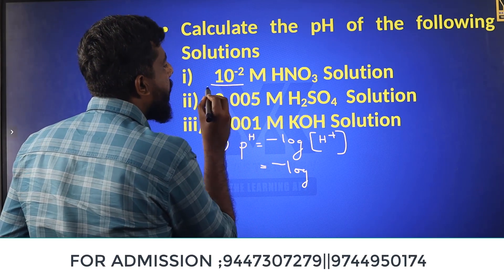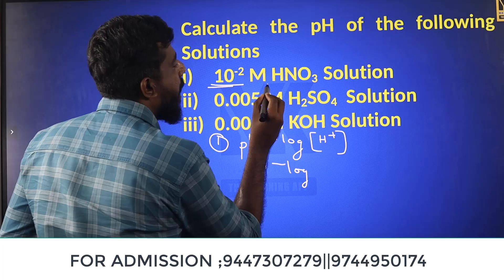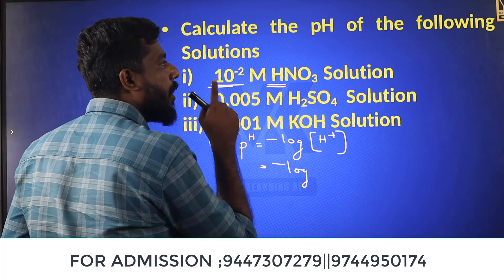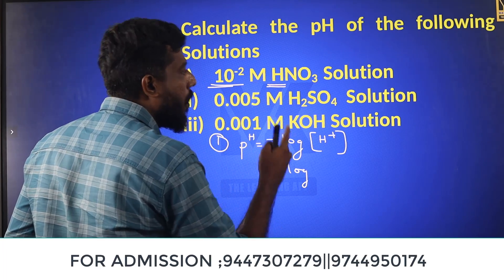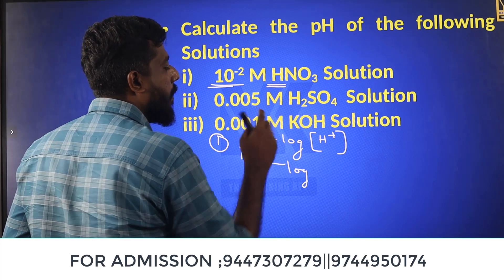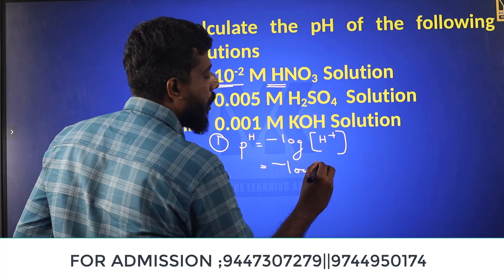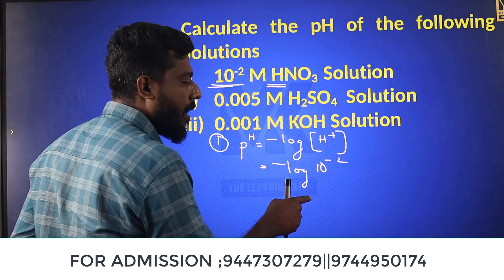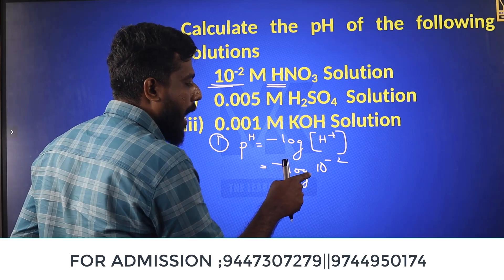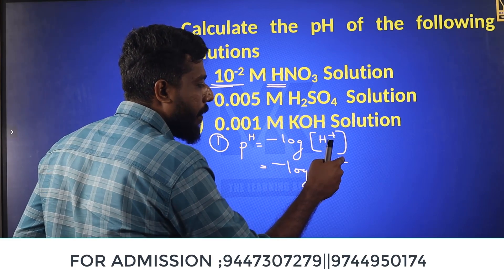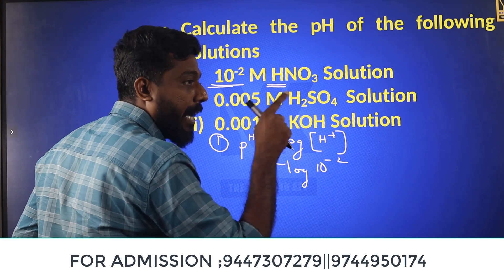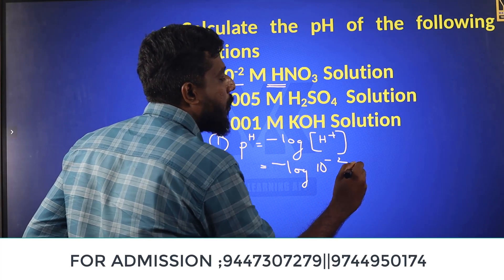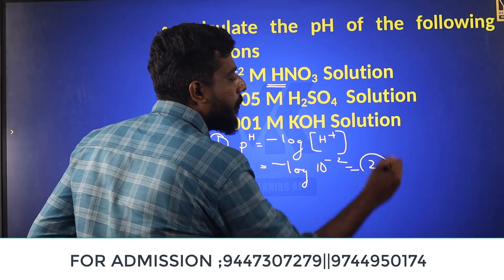Here is a question: What is the pH of a hydrochloric acid solution? The molarity is 10 raised to minus 2. HCl concentration is 10 raised to minus 2, so H⁺ concentration is 10 raised to minus 2. Minus 2 becomes the answer — pH equals 2.